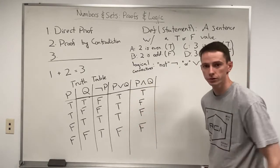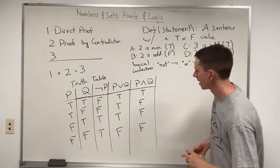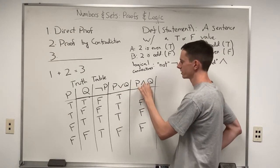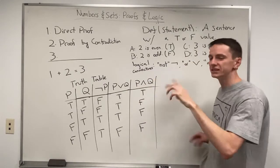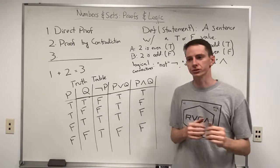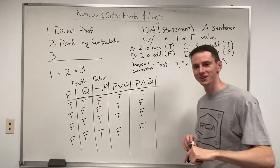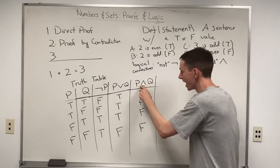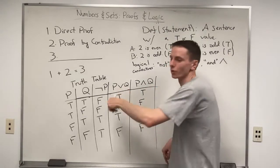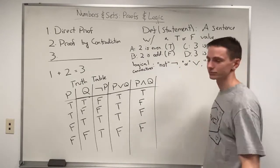A quick memory tip: the AND symbol kind of looks like the letter N, and when we say 'and' quickly — like 'A and B' — it often sounds like 'n.' So AND looks like an N, and OR is just the one that doesn't look like the letter N.